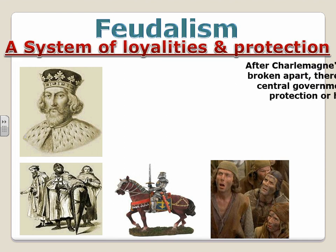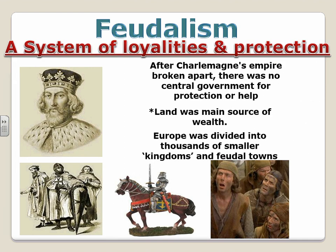I will touch upon this in the next video, but I'll end with this here. Feudalism is a system of loyalties and protections. After Charlemagne, or Charles the Great's empire was destroyed, land became the main source of wealth, and Europe was divided into thousands of tiny little kingdoms. You had many little different kings and queens governing, and many peasants throughout Europe. I'm going to explain the system of feudalism in the next video, and then in class we're going to have a little feudal simulation.